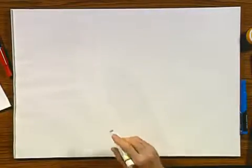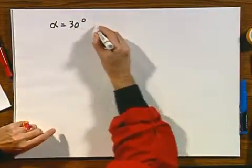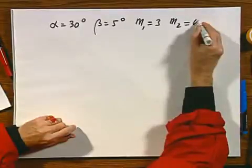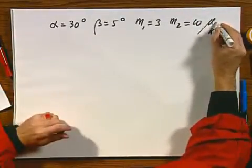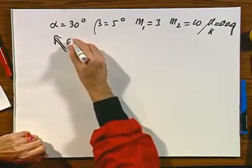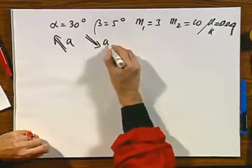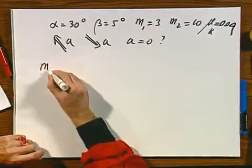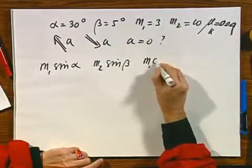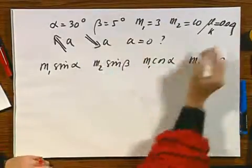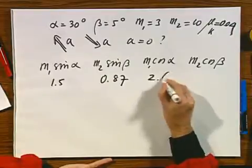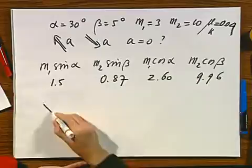I have chosen a particular example. I have chosen alpha equal 30 degrees. I have chosen beta equals 5 degrees. M1 equals 3 kilograms. M2 equals 10 kilograms. And I have chosen for mu, which is really the kinetic friction coefficient, 0.04. Well, the question now is, is it being accelerated like this on the M2 side, or like this on the M2 side, or is A equals zero? Well, what I did was, I said, let's calculate M1 sine alpha, M2 sine beta, M1 cosine alpha, and M2 cosine beta. I substitute these numbers in. If I didn't make a mistake, I find plus 1.5, 0.87, 2.60, 9.96.